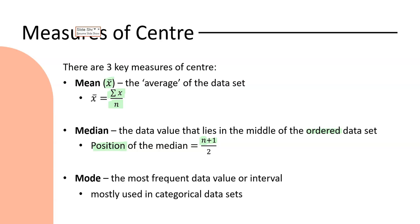And our third measure of spread, mode, is the most frequent data value or interval of data values, particularly if we've got grouped data. Most often this is used in categorical data sets but occasionally you will be asked questions to identify the mode of a numerical data set.